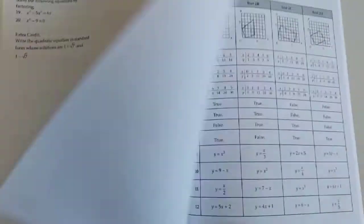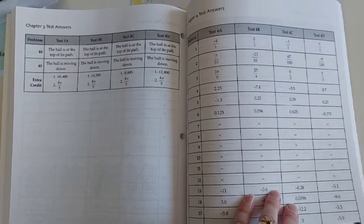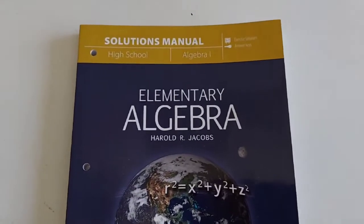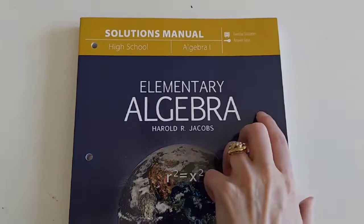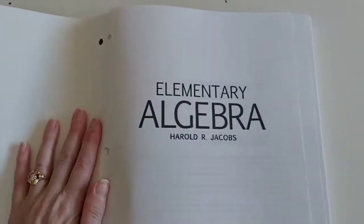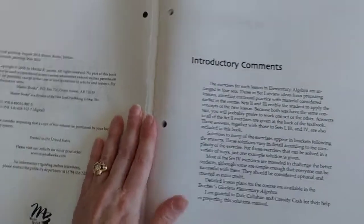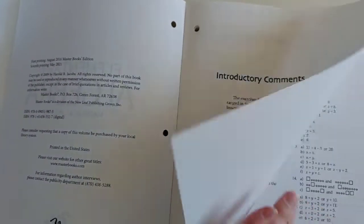And you've got the answer keys for the test back here. This is the third book that comes out of the package. It is the Solutions Manual. And this one is about over 200 pages. Around 300. So all of these are pretty hefty books.